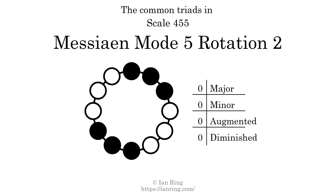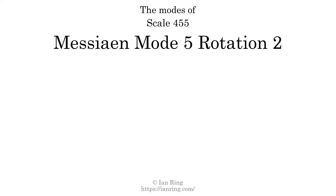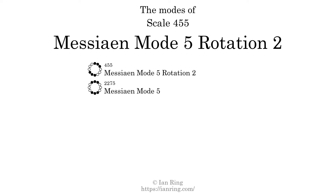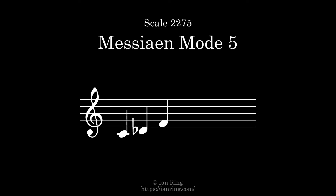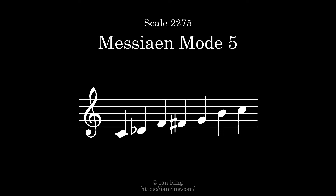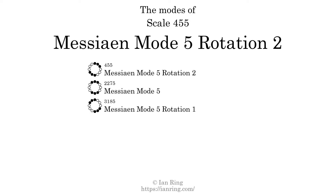There are no common triads present in this scale. This scale has 3 modes. The first mode is itself. The second mode is scale 2275, also known as Messiaen Mode 5. The third mode is scale 3185, also known as Messiaen Mode 5 Rotation 1.